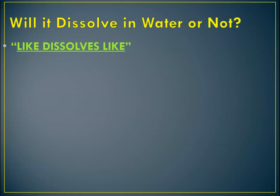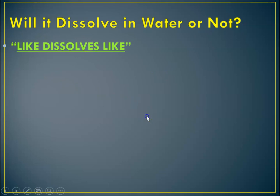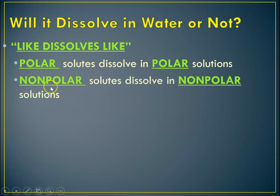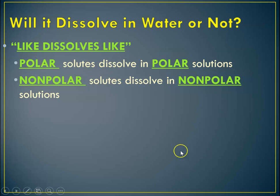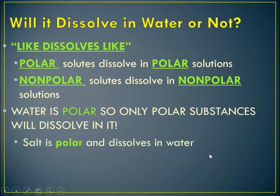So the rule of thumb is that like dissolves like. Will something dissolve in water or not? Because water is polar, things that are also polar will dissolve in it because like dissolves like. Polar dissolves polar. And nonpolar dissolves nonpolar. If I was trying to dissolve a piece of wax, I would have to pick a nonpolar solvent like carbon tetrachloride. If I'm trying to dissolve sodium chloride, which is polar, I would pick a polar solvent. Water is polar, so only polar substances will dissolve well in it. And again, salt is polar, so it dissolves readily in water.